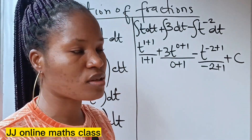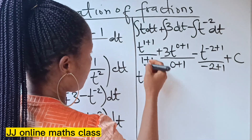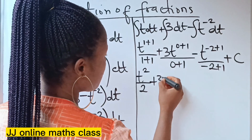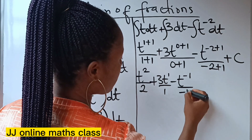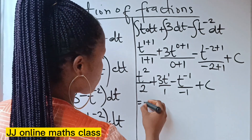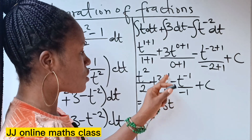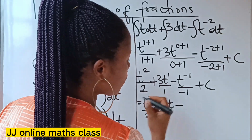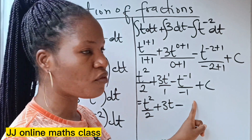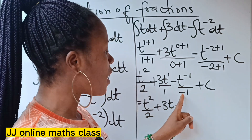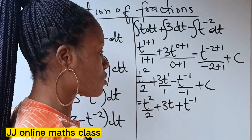Then we add our constant of integration, plus C. This gives us t to the power of 2 over 2, plus 3t to the power of 1 over 1, which is 3t. Minus: now please pay attention — you know that minus times minus gives us plus. This divided by negative 1 still gives us another negative sign. So that negative and this negative together give us plus. Therefore we have t to the power of minus 1, plus C.